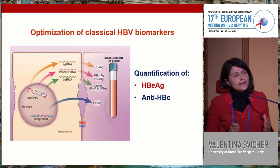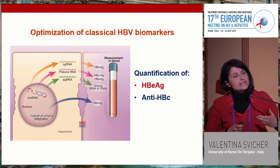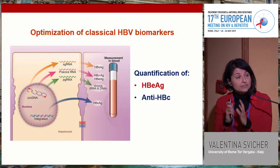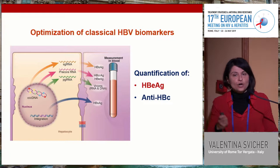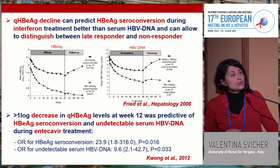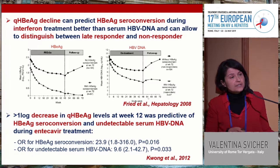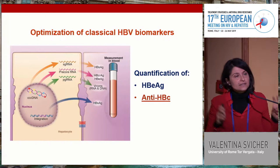On one hand, the scientific community is moving towards optimization of classical biomarkers — going beyond simple qualitative detection and allowing their quantification. This is the case for HBeAg and anti-core. Different studies have shown that quantitative HBeAg, in particular the decline of HBeAg during treatment, can help predict HBeAg seroconversion during either interferon or NUC treatment.